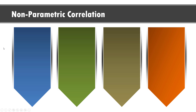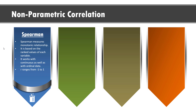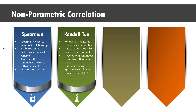Now let us discuss nonparametric correlation methods. The first method is Spearman correlation, which is a measure of monotonic relationship between two continuous or ordinal variables. It is less sensitive to outliers. If the Spearman correlation coefficient is close to 0, it means there is no monotonic relationship. It is based on rank values rather than raw data and ranges from minus 1 to plus 1. The second method is Kendall Tau, which is similar to Spearman but is more robust and generally preferred over Spearman correlation.